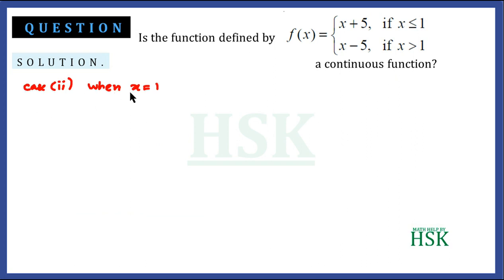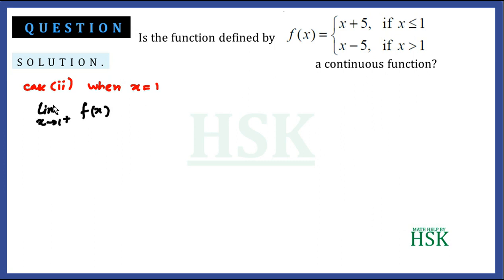In the second case, when x = 1, this represents a specific point where the function changes its definition. To check continuity at this point, we calculate both the left hand limit and the right hand limit of the function at x = 1.